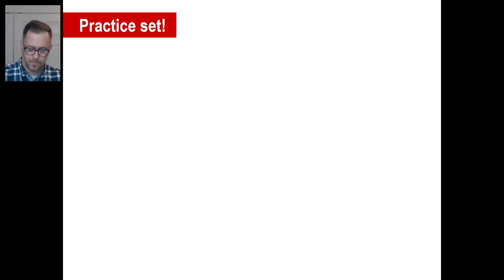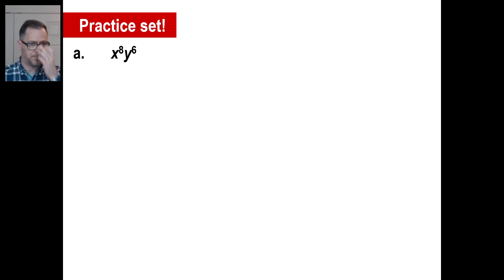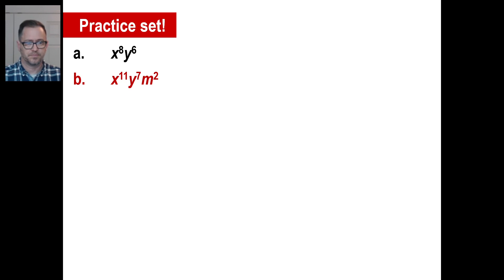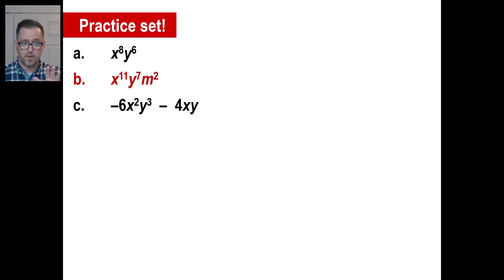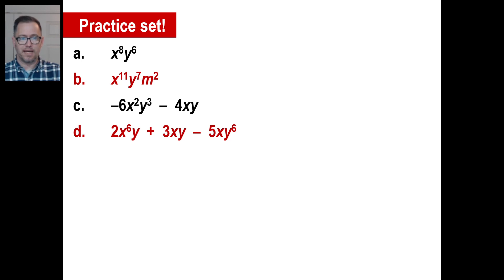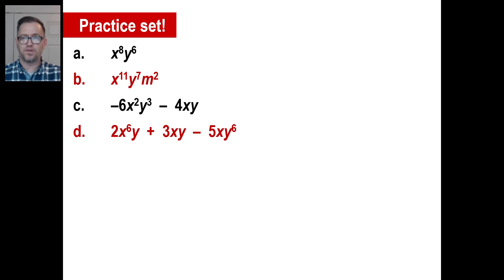Let's try the practice set and I'll give you the answers as you go. Pause and try a — okay, a is x to the 8th and y to the 6th; that's just an addition problem. Try b — b is x to the 11th, y to the 7th, and m squared. Try c — c is negative x squared y to the 3rd minus 4xy; even though both have x and y, the exponents don't match so you can't combine them. Try d — d is 2x to the 6th y plus 3xy minus 5xy to the 6th. Those are not like terms either. All right, that was it for today — you guys have a great day, see you next time.